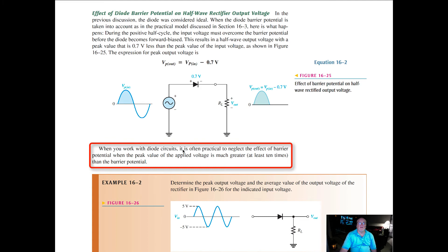When you work with diode circuits, it's often practical to neglect the effect of the barrier potential when the peak value of the applied voltage is much greater, i.e., ten times greater than the barrier potential. If we're looking at 100 volts, then forget about the seven-tenths because it's going to be so small it will be meaningless.